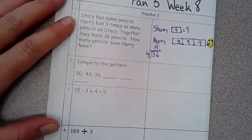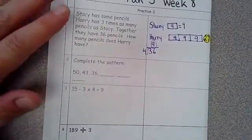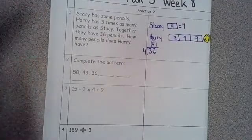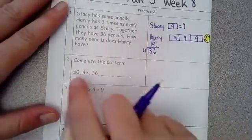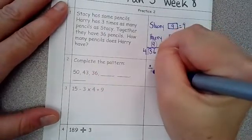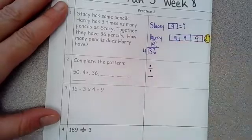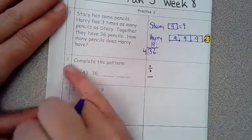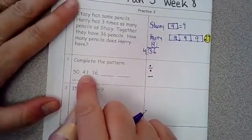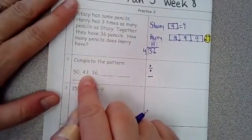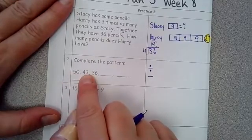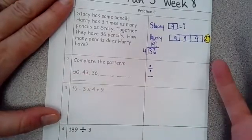Alright, here we are going to complete the pattern. So yesterday and the day before that, I talked with you about how if the pattern is getting smaller, it's either dividing or it's subtracting. It has to be doing one or the other if it's getting smaller. Okay, so if it's going from 50 to 43, there's nothing that you can divide 50 by that will give you 43. Okay, so we have to assume that this is subtraction.